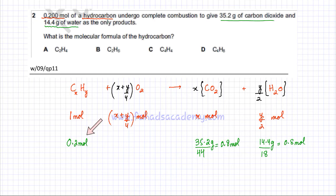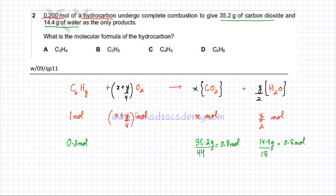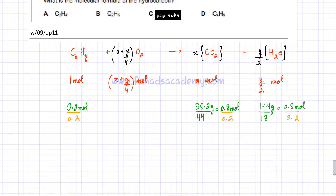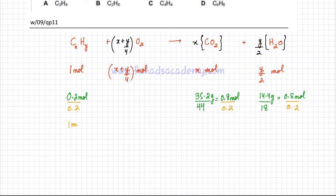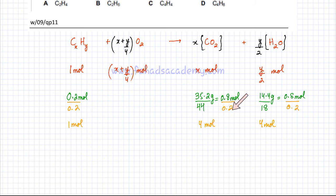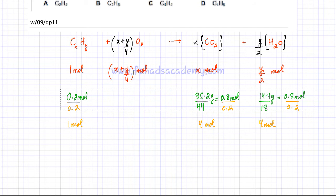We have the moles of the hydrocarbon (0.2), carbon dioxide (0.8), and water (0.8), but we need a whole number ratio. We divide everything by the smallest value, 0.2: 0.2/0.2 = 1, 0.8/0.2 = 4, and 0.8/0.2 = 4. So one mole of the hydrocarbon produces four moles of CO2 and four moles of H2O.